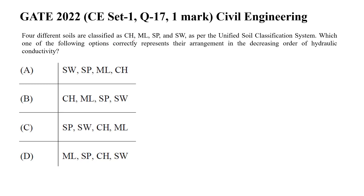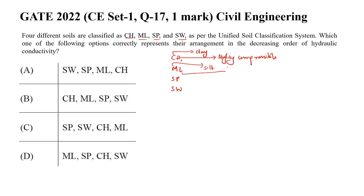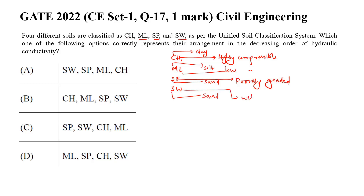Four different soils are classified as CH, ML, SP, and SW as per the Unified Soil Classification System. The question asks for their arrangement in decreasing order of hydraulic conductivity. CH refers to highly compressible clay, ML refers to low compressibility silt, SP refers to poorly graded sand, and SW refers to well graded sand.